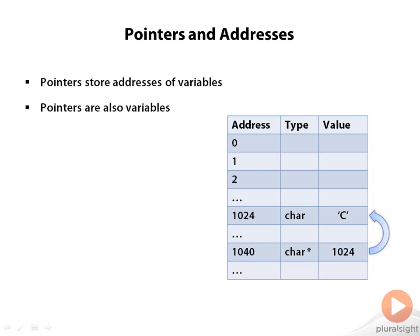Pointers, or pointer variables, also include a type that indicates the type of the variable being pointed to, to provide a degree of safety as the compiler can check that you are using the variable being pointed to according to the rules governing that particular type.